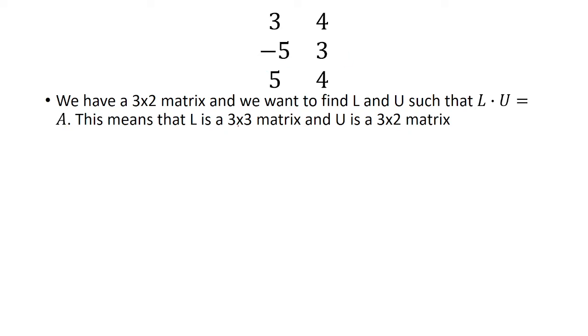So this means that L is a 3 by 3 matrix, and U is a 3 by 2 matrix. So let's say the dimensions of L are M by N. We know U has to be N by P, and this is equal to A, which is a 3 by 2 matrix.